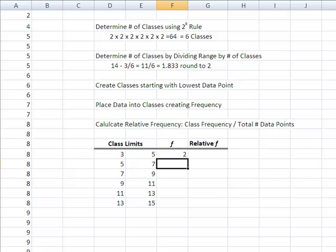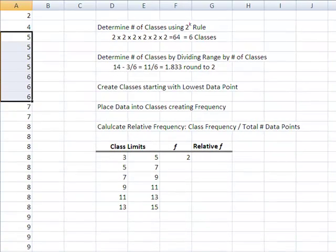Remember between 5 and 7, I'm only going to have 5 up 2 but not including 7. So that's going to give me 1, 2, 3, 4, 5, 6, 7 data points.